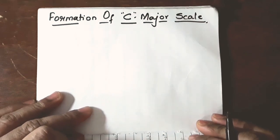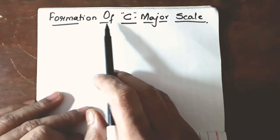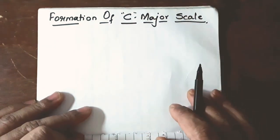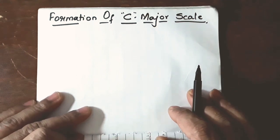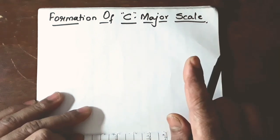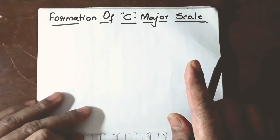Hello friends, so today we will study the formation of C major scale. First thing we will do is write down the chromatic scale of C major. If you do not know what is chromatic scale, please refer to the link above in which I have mentioned about chromatic scale.